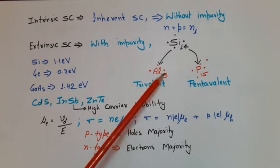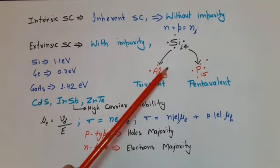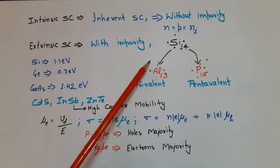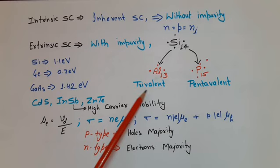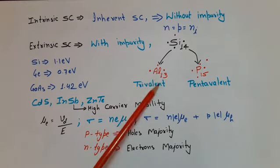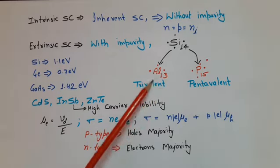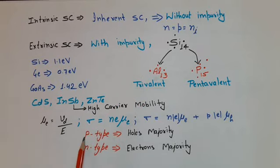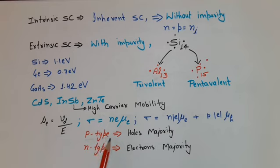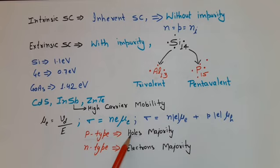If we add a trivalent impurity to a semiconductor, a number of holes will be created and these holes are ready to move. This type of semiconductor is known as a P-type semiconductor. In this semiconductor, the current carriers are holes — or we can say the majority current carriers are holes and the minority current carriers are electrons.